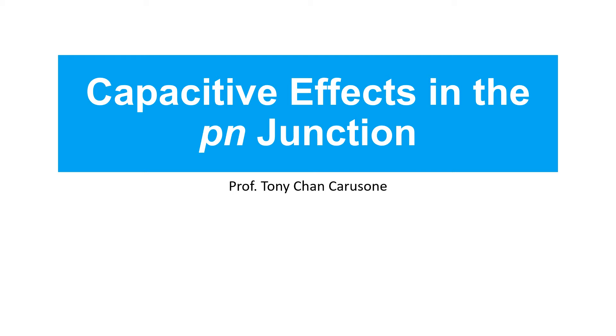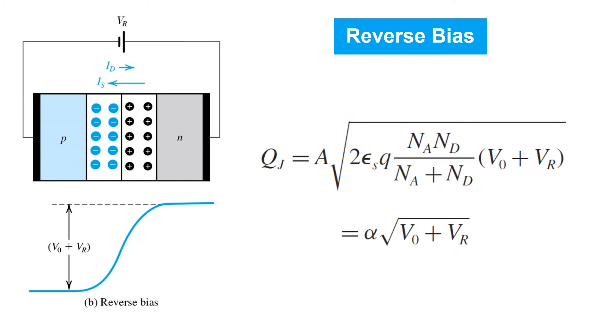In this video, we'll learn about capacitive effects in the P-N junction. The depletion region that forms in P-N junctions is an insulator between two conducting parts of the junction, the P-side and the N-side. So it's not surprising that we have capacitance here between these two conductors separated by an insulator.